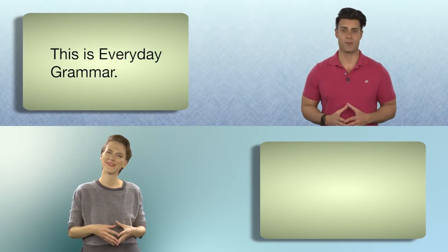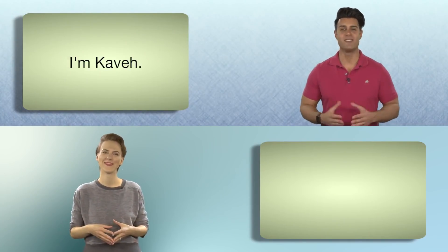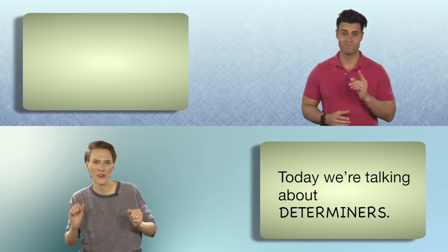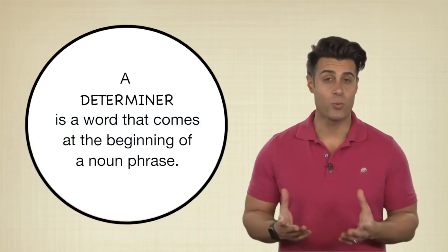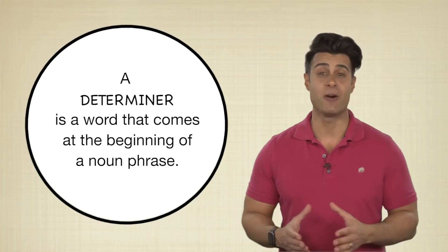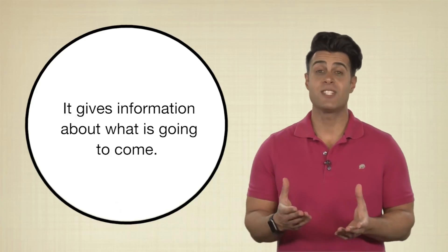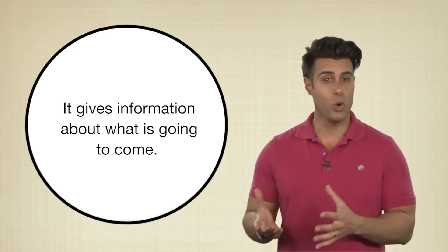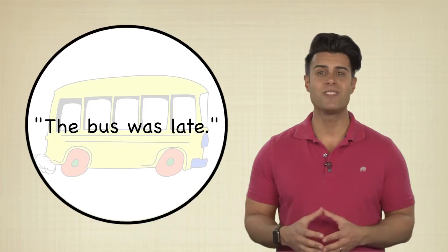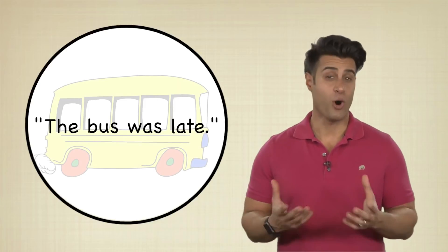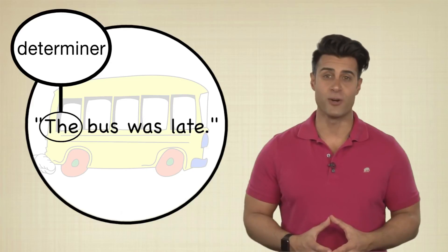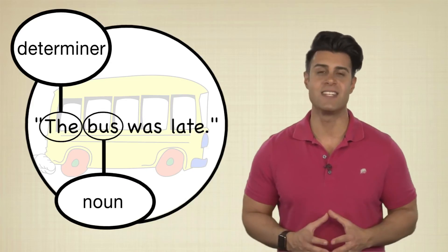This is Everyday Grammar. I'm Kaveh. And I'm Lucia. Today we're talking about determiners. A determiner is a word that comes at the beginning of a noun phrase. It gives information about what is going to come. For example, the bus was late. The article "the" is the determiner, and "bus" is the noun.